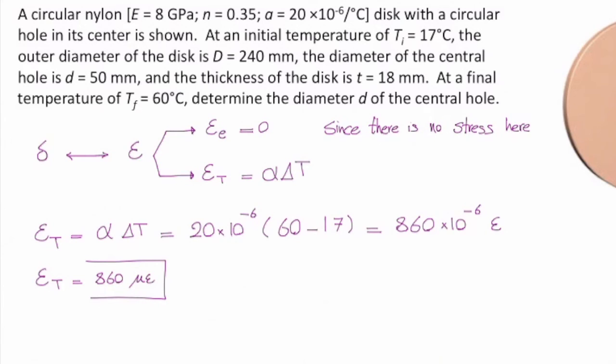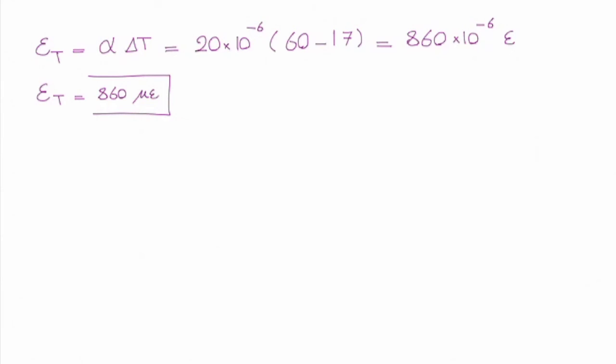How can I determine change in the diameter? That is equal to the initial length times the strain. So how much is the initial length? I'm looking for the change in the internal diameter. The internal diameter is 50, so I simply multiply 50 by this epsilon.